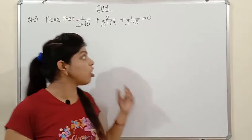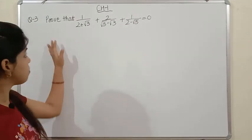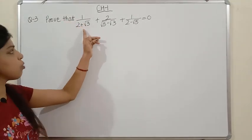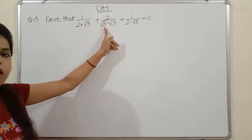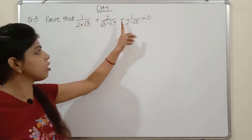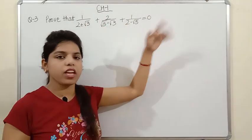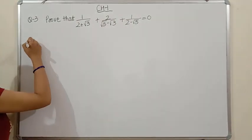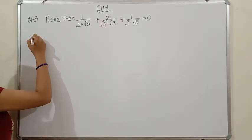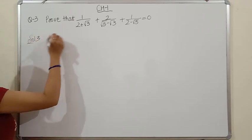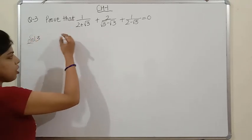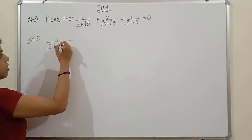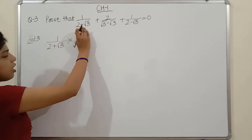Moving on to Question 3: prove that 1/(2+√3) + 2/(√5-√3) + 1/(2-√5) = 0. You can see that each term has an irrational number in the denominator, so in the first step we straightaway rationalize all three terms.